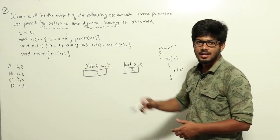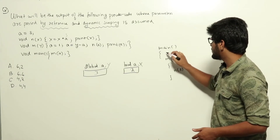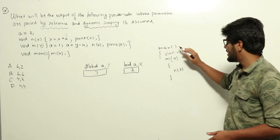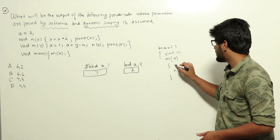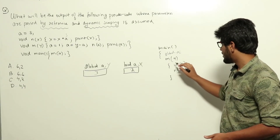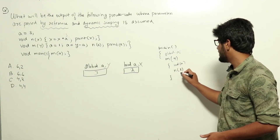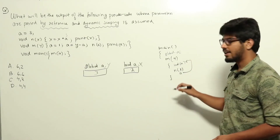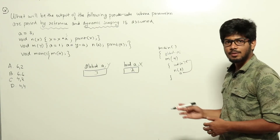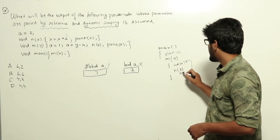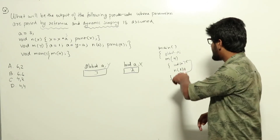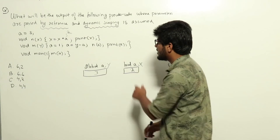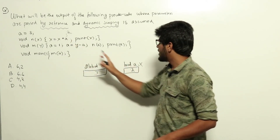Inside n, we do x equal to x into a. Now what is this a? Since dynamic scoping is used: we started in main, called m from main, declared a local a inside m, and then called n from inside m. So the nearest a in the dynamic call chain is the local a from m. In dynamic scoping, this a refers to local a whose value is 2. x is also 2, since x and local a are the same.